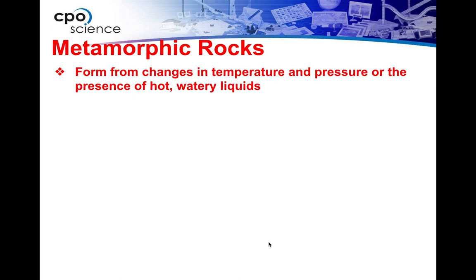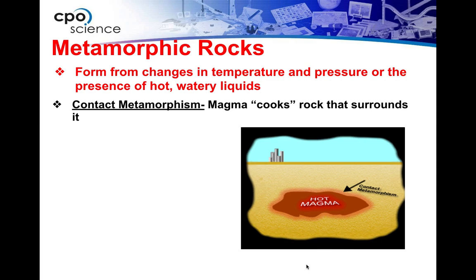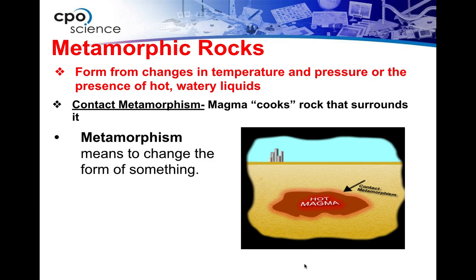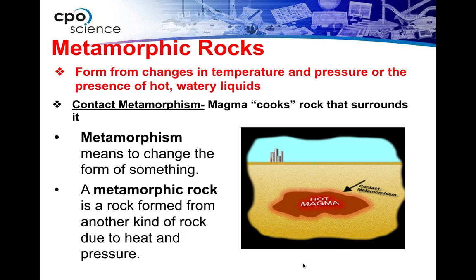Think about squeezing — really vast amounts of pressure. Metamorphic rocks can also be formed when hot, watery liquids get essentially injected into nearby surrounding rock. One of the terms we use is contact metamorphism. You can see in the picture — it looks a little cartoon-like, but it's showing you that if you have magma in a location, the surrounding rock can get cooked. You'll often see an inner portion of igneous rock, and surrounding that on the outside, you're going to have metamorphic rock, because it wasn't hot enough to melt it, but it was hot enough to cook it. So metamorphism just means to change the form of something. A metamorphic rock is a rock formed from another kind of rock due to heat and pressure.